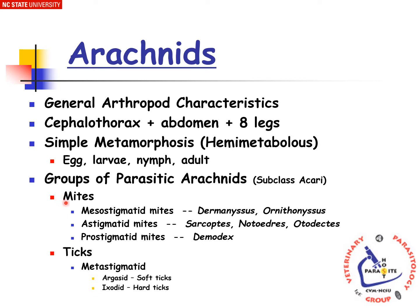The mites belong to the subclass Acari, and it is composed of different suborders, which include the Mesostigmata, Astigmata, and the Prostigmata. For the Mesostigmata mites, this includes Dermanyssus and Ornithonyssus. For the Astigmata mites, this includes Sarcoptes, Notoedres, and Otodectes. For the Prostigmata mites, this includes Demodex.